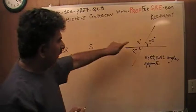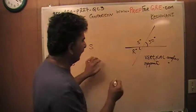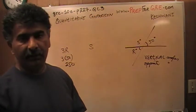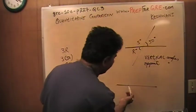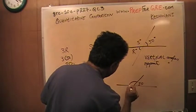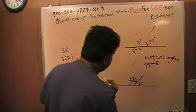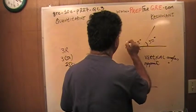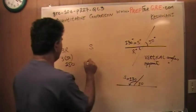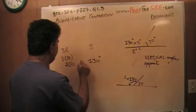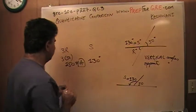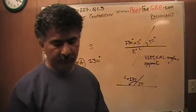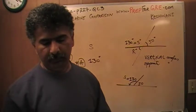Now let's take a look at S. S is straightforward because S sits on a straight line. This is our straight line here, and the sum of the angles on a straight line is 180. If part of that is 50 and part of that is 50, then the remaining has to be 130, which is S. So S is 130. The answer is A — the quantity in column A is bigger because in column A we have 150, and in column B we have 130.